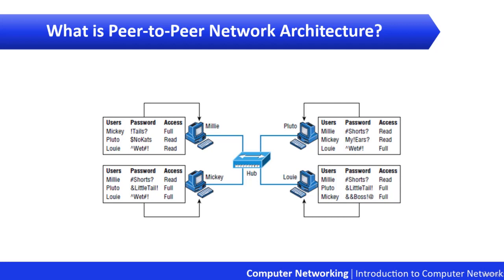As you can see on the screen, this is an example of a peer-to-peer network architecture. Millie, Pluto, Mikey, and Louie are four users, and each user is storing the passwords of the remaining three peers. For example, if Pluto wants to access the resources of Mickey, Mickey has to remember the password of Pluto. This seems manageable for four computers, but what if there are hundreds or thousands of computers? Is it possible to store all the information for each and every peer across thousands of computers?